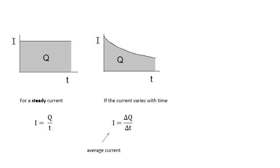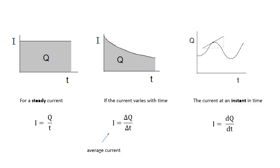Later on in the course when we do capacitors, the current isn't steady. ΔQ/Δt gives the average current; the charge Q is still the area under the graph. When you've done more maths, you'll understand that the current at an instant is dQ/dt — meaning if you have a graph of Q against time, it's the gradient at a certain point. dQ/dt means the gradient of the graph.